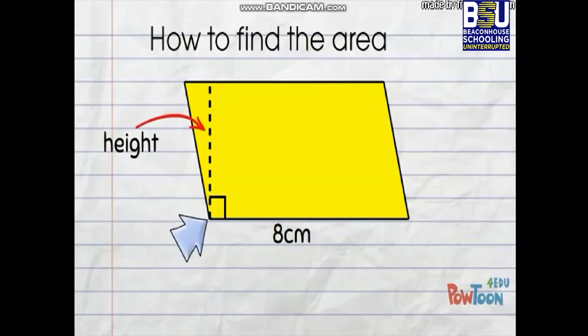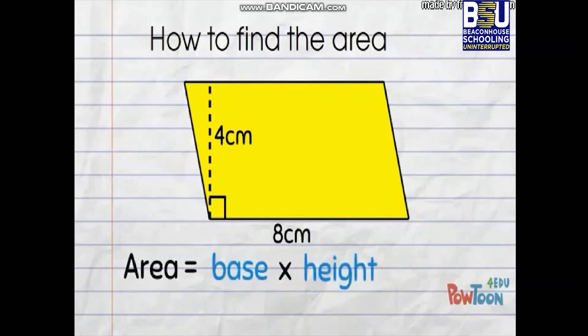Here's our height, it's 4 centimeters. Now we have measurements on two sides that meet at a right angle, so we're ready to go. The area of a parallelogram is base times height, so 8 times 4 is 32 centimeters squared. Never forget units of measurement squared.